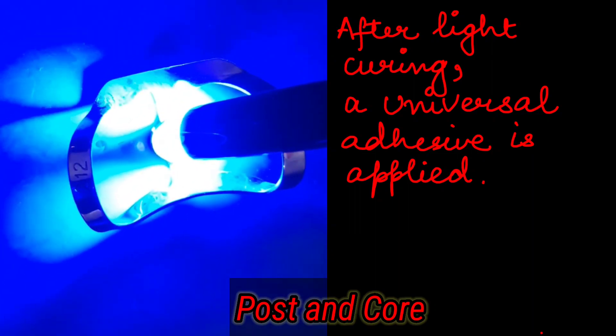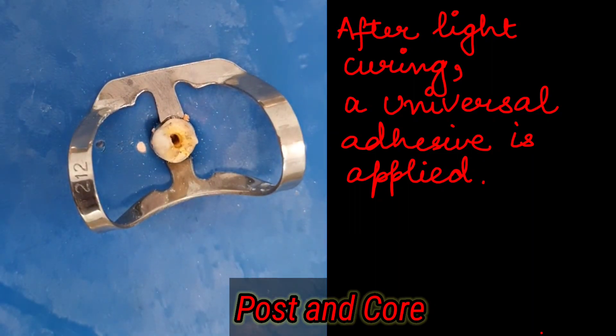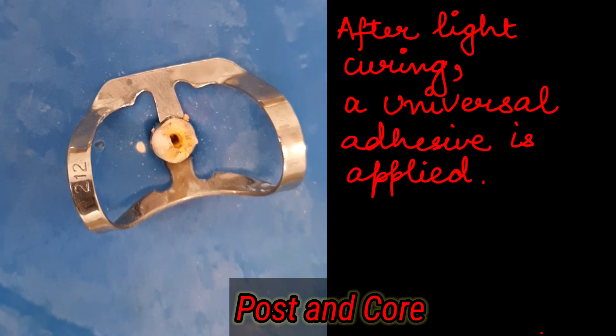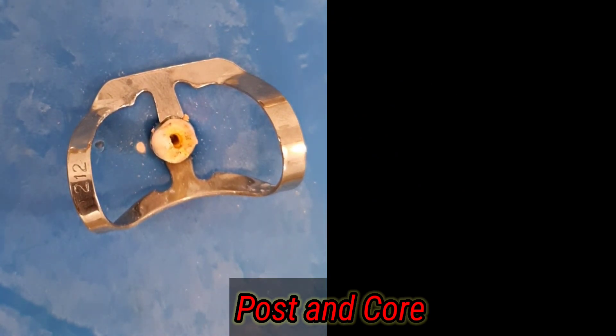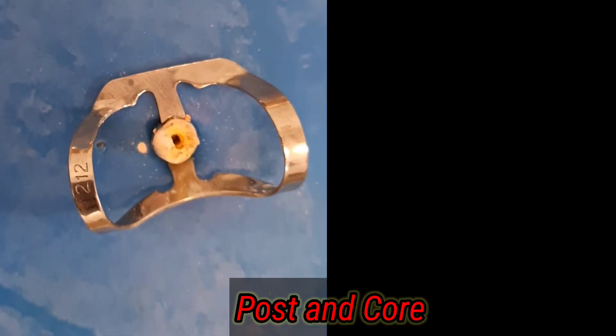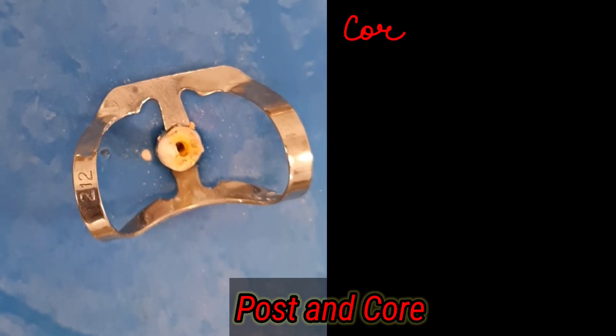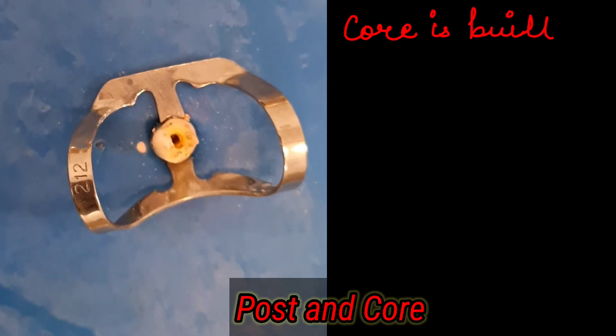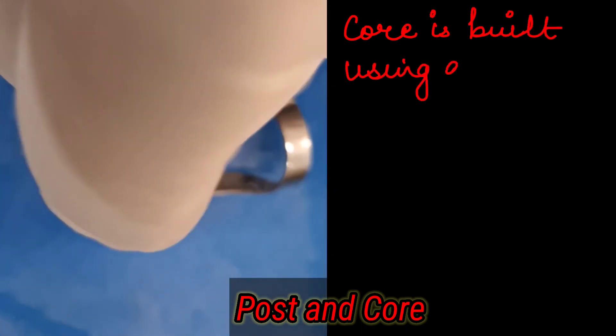After cleaning and drying, the post is cemented using a self-adhesive resin cement with a special endo tip. We use the special endo tip and then we take our fiber post and we use the build-up material along the fiber post.